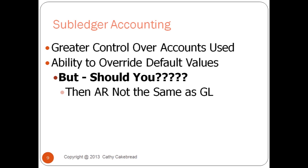A real key caveat: if you do use SLA to change your accounting values and how they're derived, what happens is AR and your AR reports will show one GL account, and your GL and SLA reports will show another account. You'll always have a reconciling item, and that's a bad thing. Study this carefully and see if there's something you could do in Receivables so you wouldn't have to use SLA. That would always be my first choice, because overriding the accounts is a pretty dangerous option.